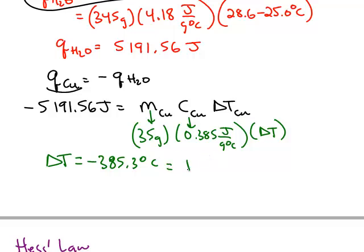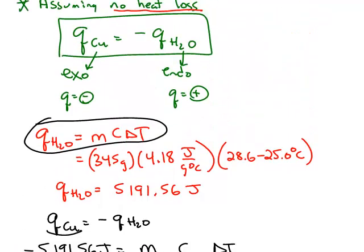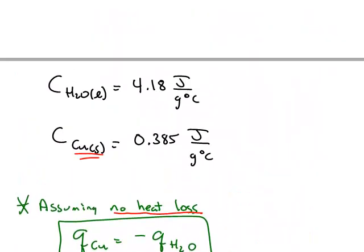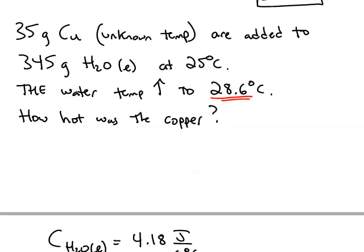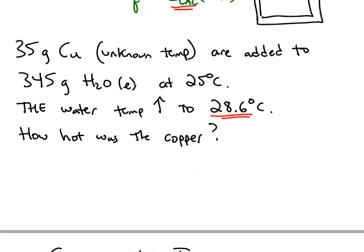And remember, delta T is final temperature minus the initial temperature. We don't know what the initial temperature of that hot copper was, but we do know the final temperature. The final temperature of the copper is going to continue to transfer heat to the colder water until they both reach the same temperature, 28.6.